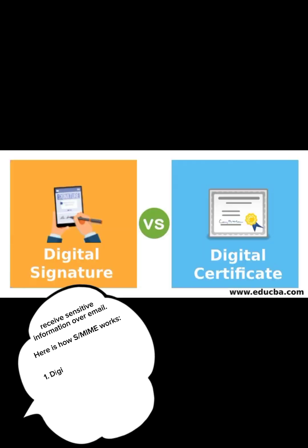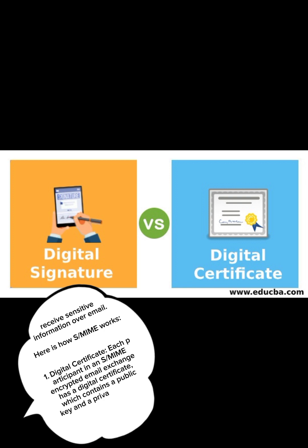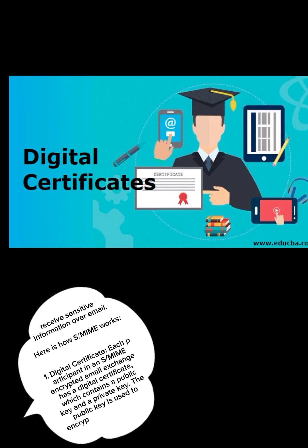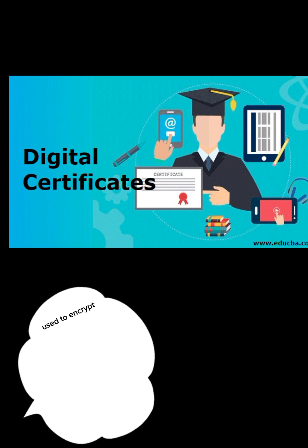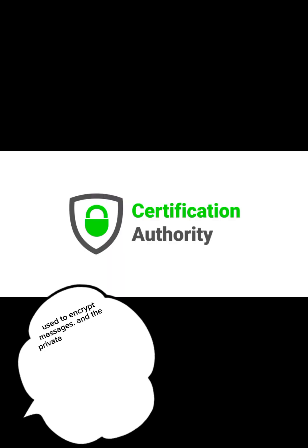Here is how S-MIME works. 1. Digital Certificate: Each participant in an S-MIME encrypted email exchange has a digital certificate, which contains a public key and a private key. The public key is used to encrypt messages, and the private key is used to decrypt them.